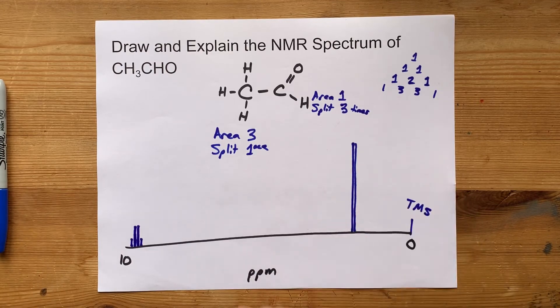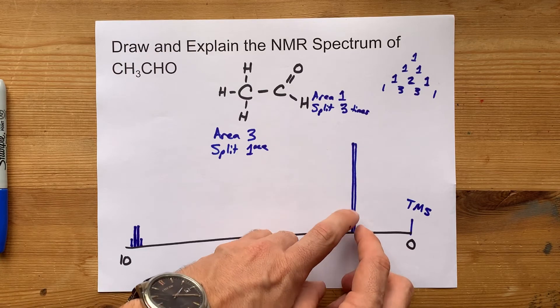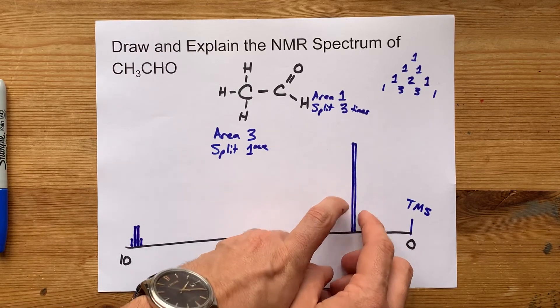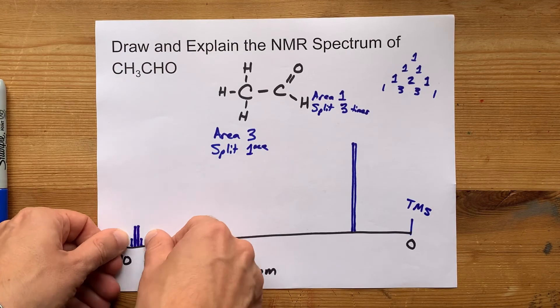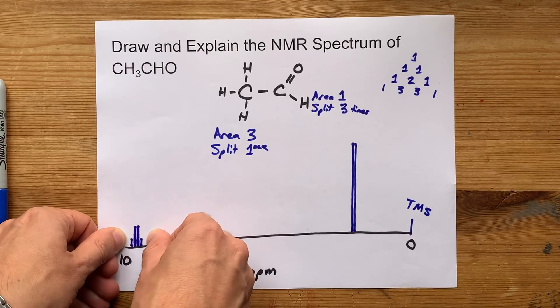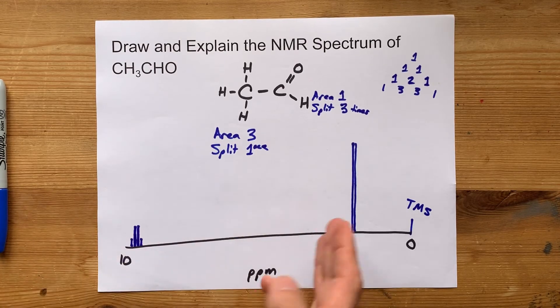You may or may not have to show TMS, but you have a single hydrogen. Sorry, you have three hydrogens split once here. Those are your methyl hydrogens. You have one hydrogen split three times here. That's what gives you the 1-3-3-1, and they're all relatively short to the actual NMR.